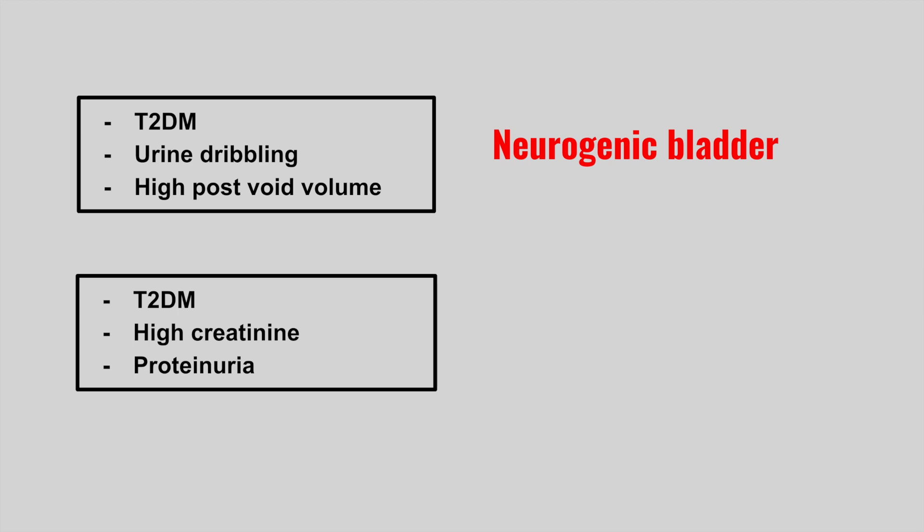The next patient with type 2 diabetes now has high creatinine and proteinuria. This is diabetic nephropathy.